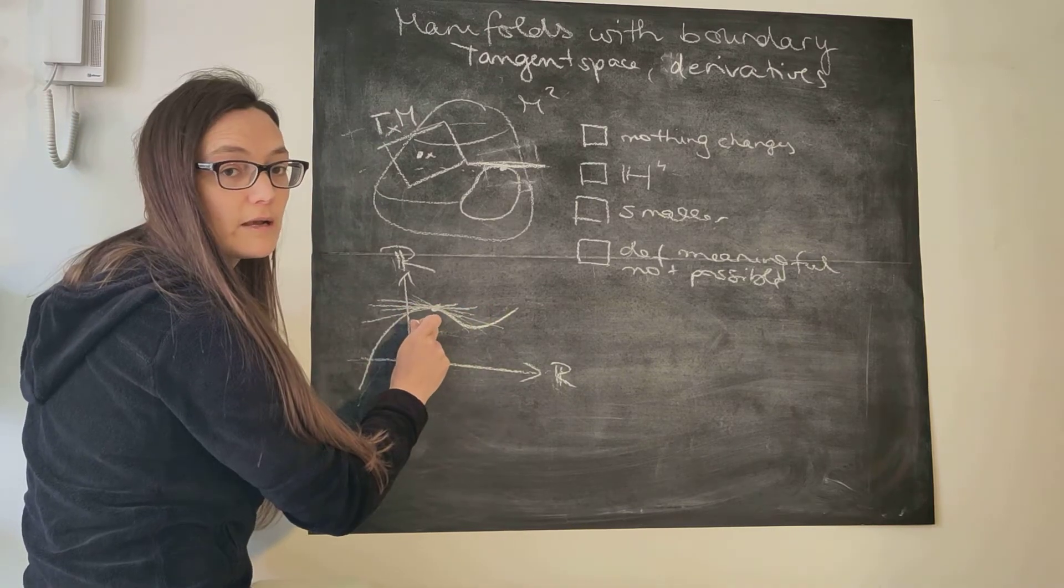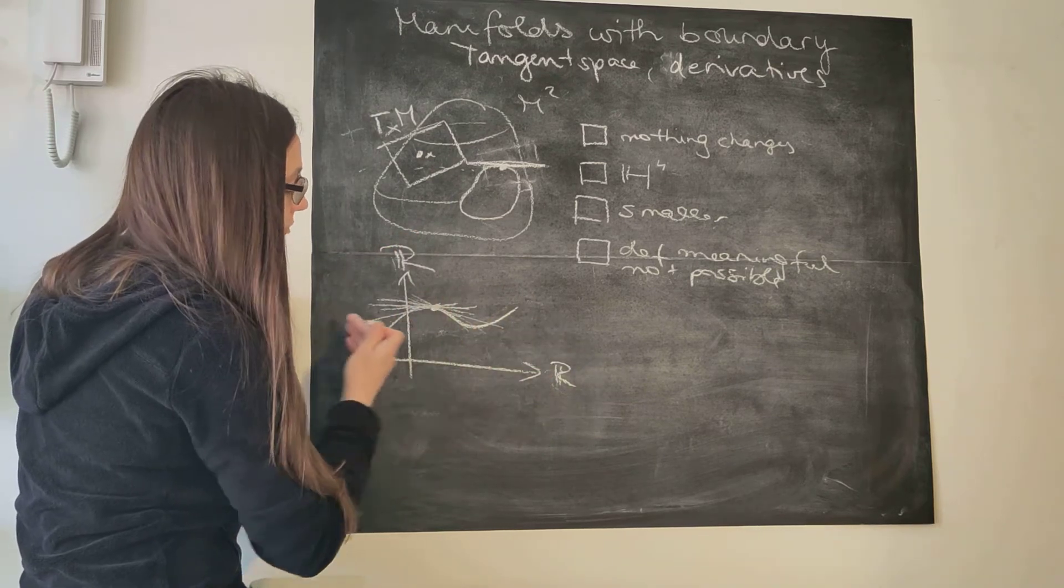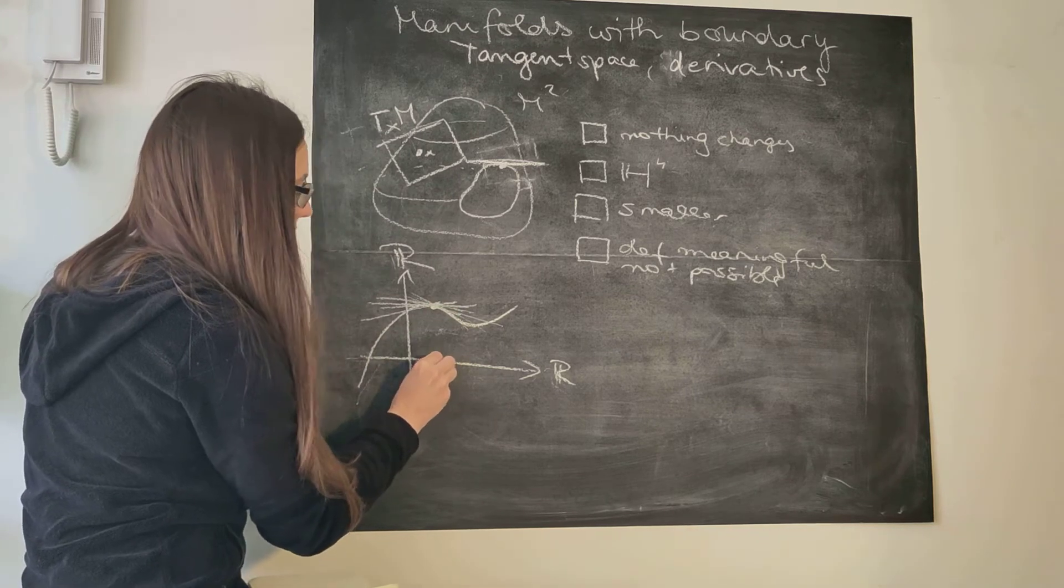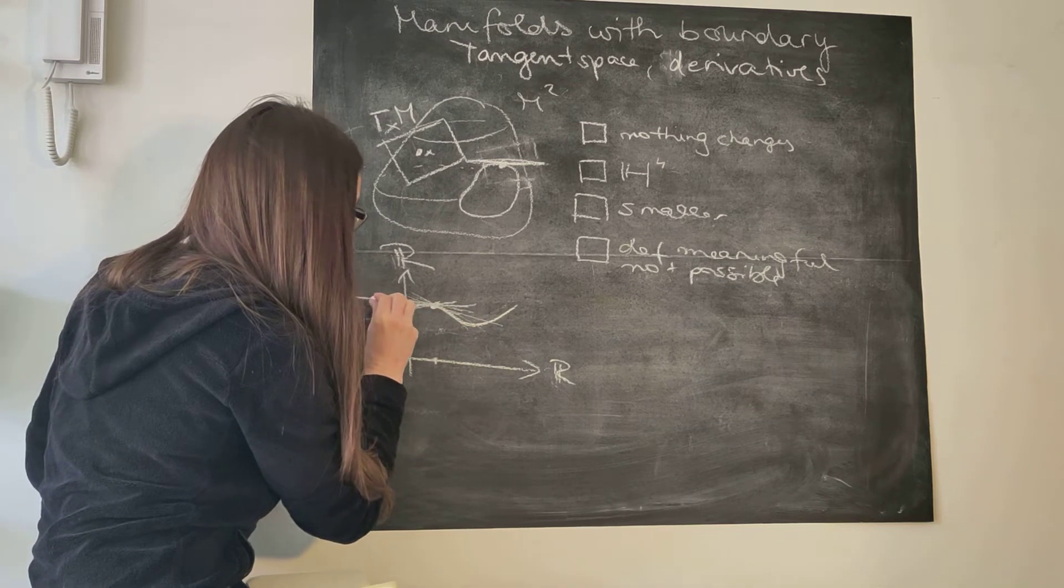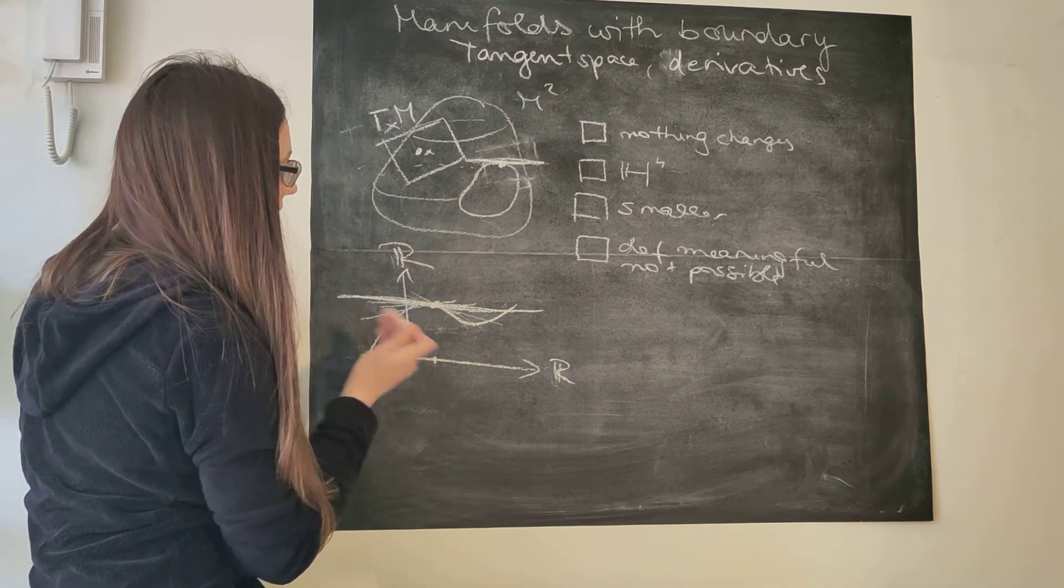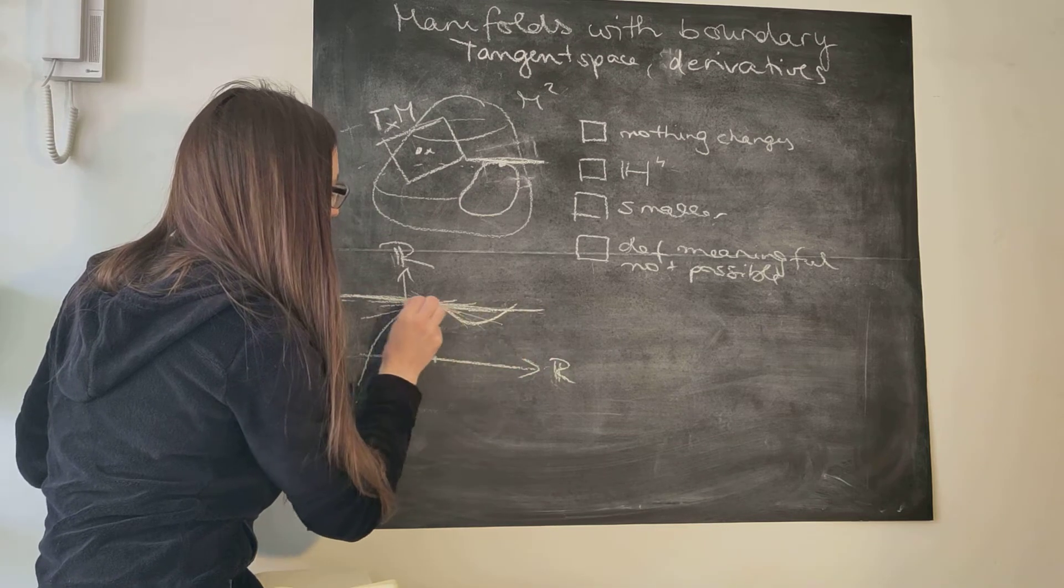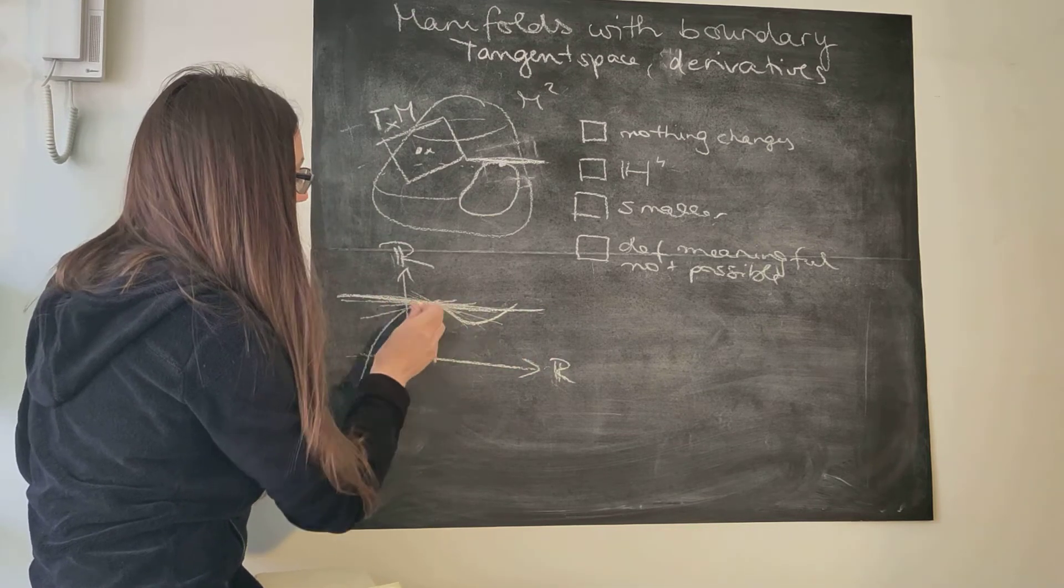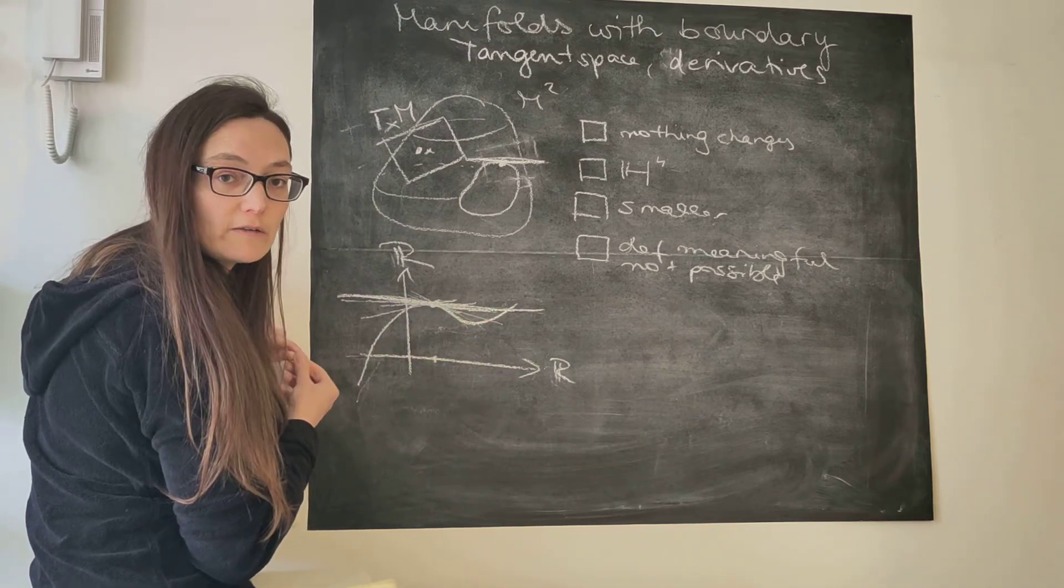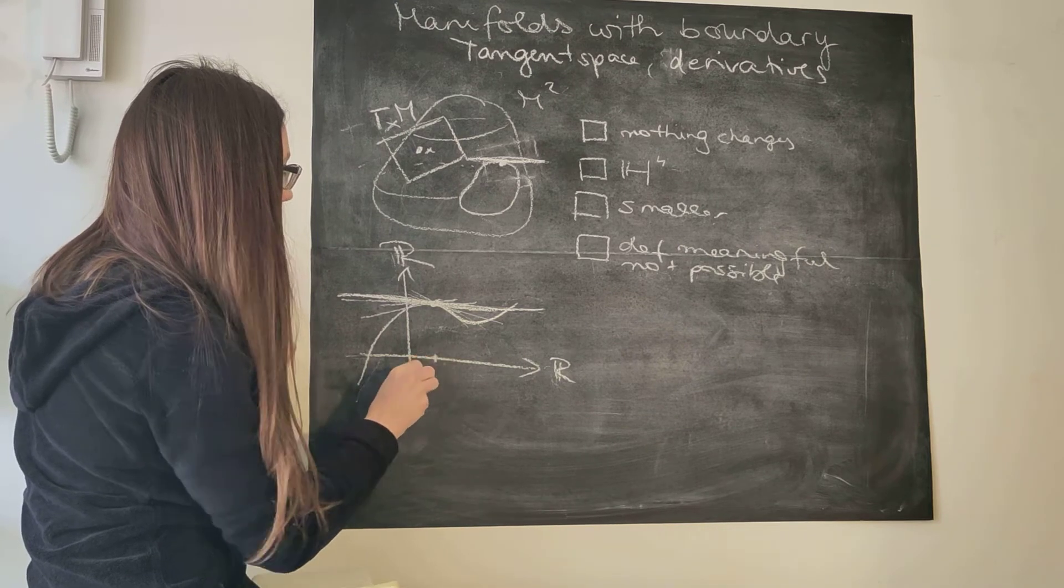And then if in the limit the slopes are the same, both from the right and from the left, we say the function is differentiable in this point and the slope of the limit is the derivative and the best linear approximation, which is this linear line of this limit secant, is the tangent space in this case.